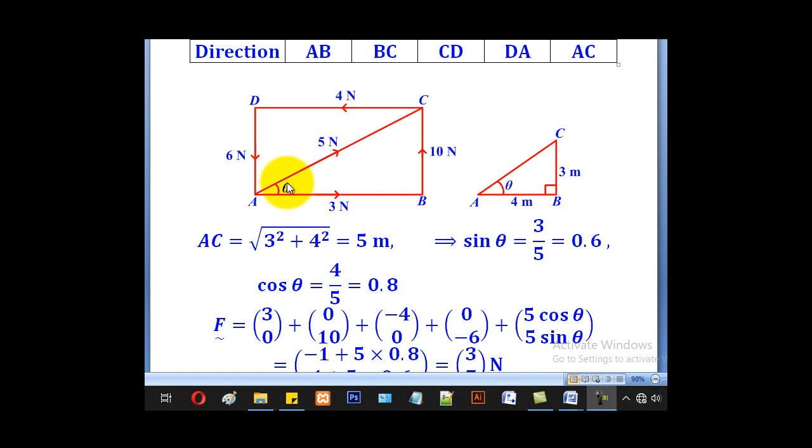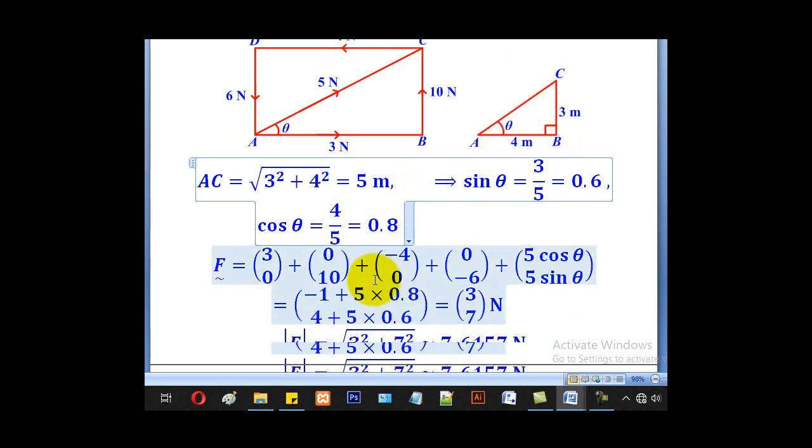Then you also have this angle. It's no longer 45°—that's when it's a square. In this case, we shall use the sides given: AB is 4 and BC is 3. AC will be √(3² + 4²), giving 5 meters. So sin θ is opposite over hypotenuse, giving 3/5 = 0.6. And cos θ equals adjacent over hypotenuse, giving 4/5 = 0.8. Having known the angle, we shall now go to resolving.